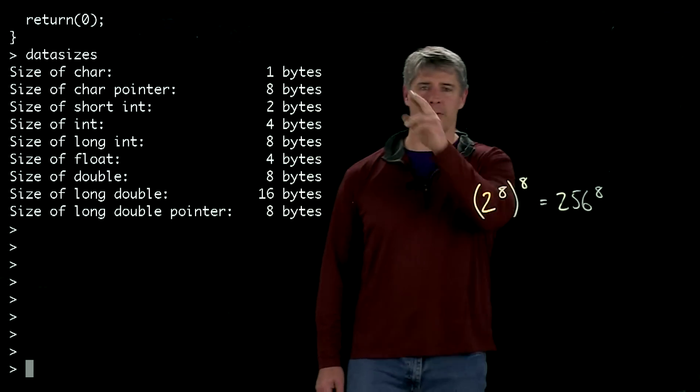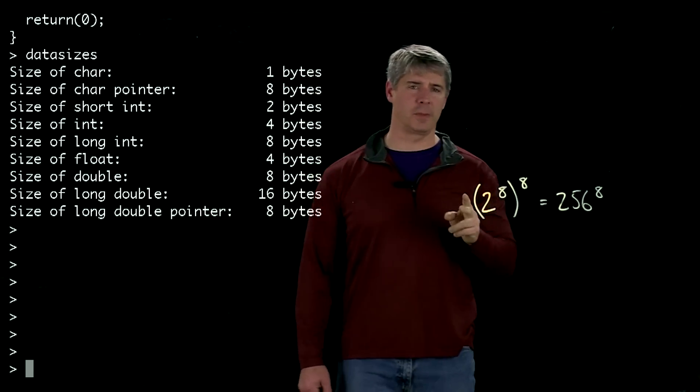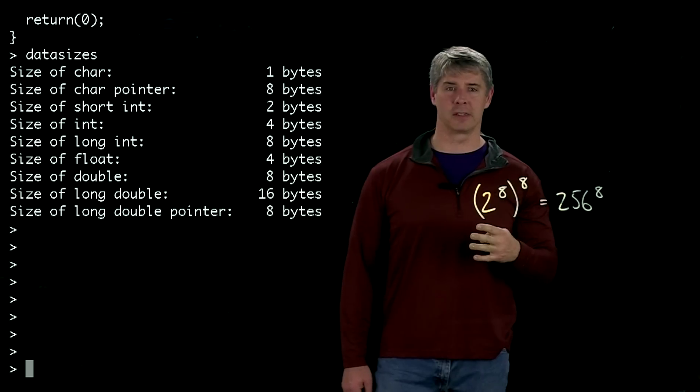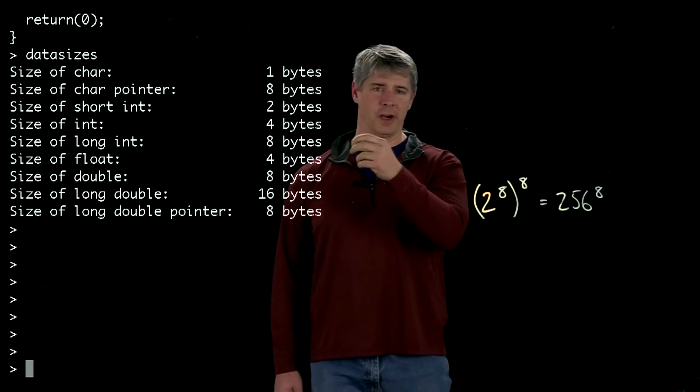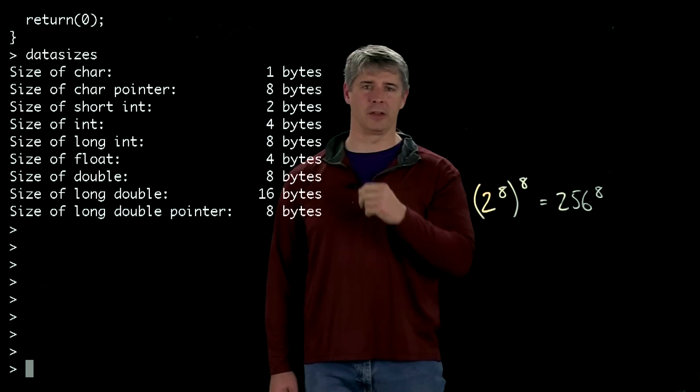Okay, so we have eight bytes for the representation of an address. A short int uses two bytes instead of the standard four bytes. An int uses four bytes, as we've seen before. A long int, on my computer anyway, uses eight bytes.